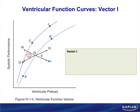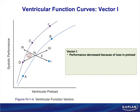Now let's work with these curves using vectors 1 through 4. Vector 1: we go from N to D. Preload went down and performance went down — they went the same direction, so this is a Frank-Starling mechanism. The initial event is a drop in preload. Performance decreased because of a loss of preload, which means a loss of venous return. This causes a reduction in cardiac output and a reflex sympathetic stimulation, so contractility went up to partially compensate for the loss in preload.